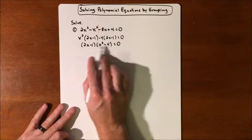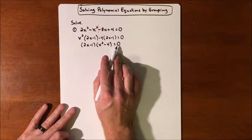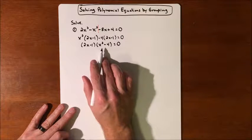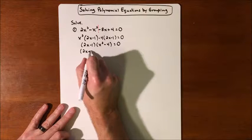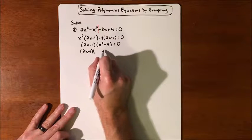Now at this point, since we're solving the equation, we could use zero product property and just set each factor equal to 0. Or if we recognize that this is factorable.